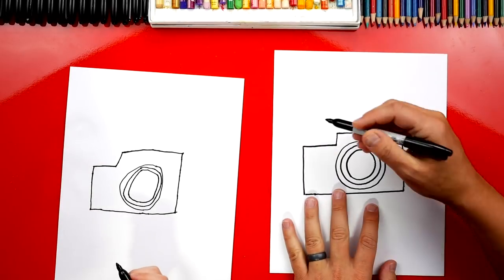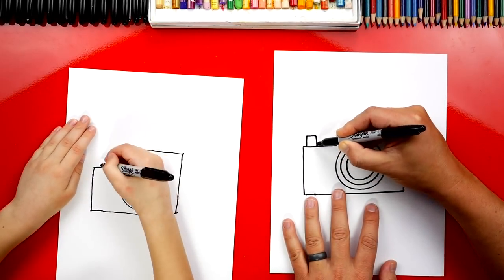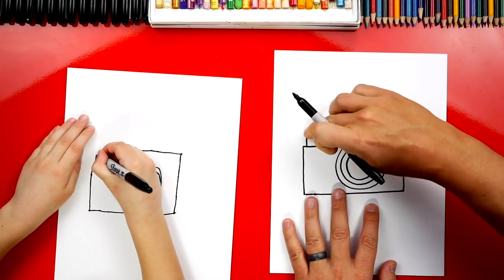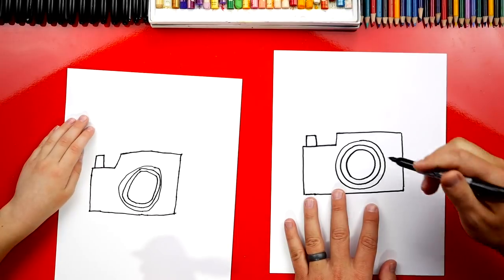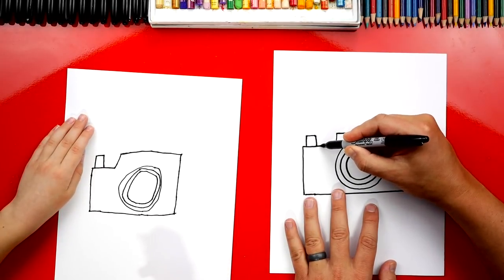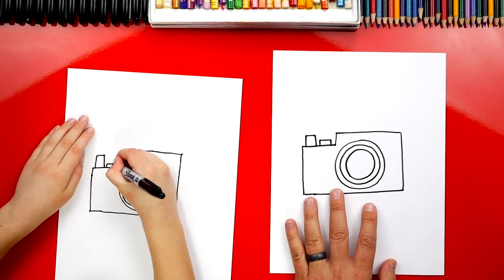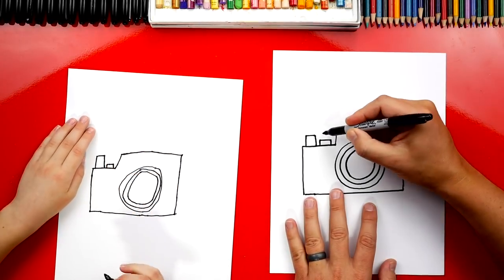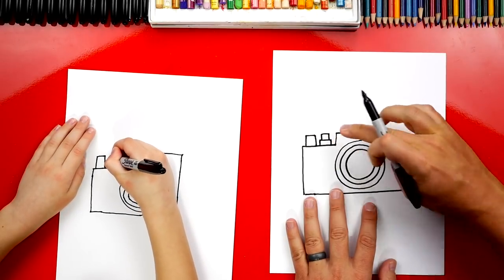Let's add the buttons next. Let's draw one square over here. We're going to go up, over, and down. The height of the button is the same height as the camera. Now let's do another one. This time, we're going to draw one that's shorter, so it looks like a rectangle. Up, over, and down.